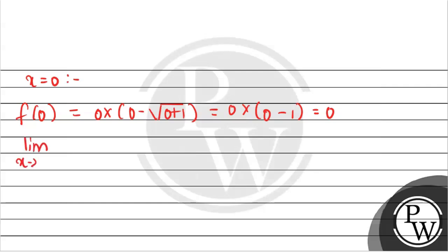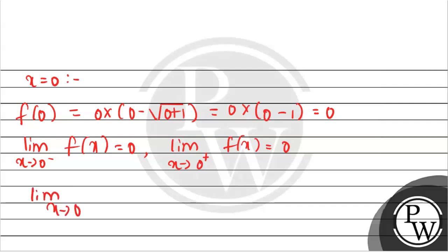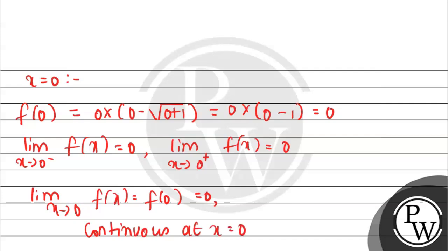The limit as x approaches 0 from the negative side of f(x) equals 0, and the limit as x approaches 0 from the positive side of f(x) equals 0. Since the limit as x approaches 0 of f(x) equals f(0) = 0, our function is continuous at x=0.